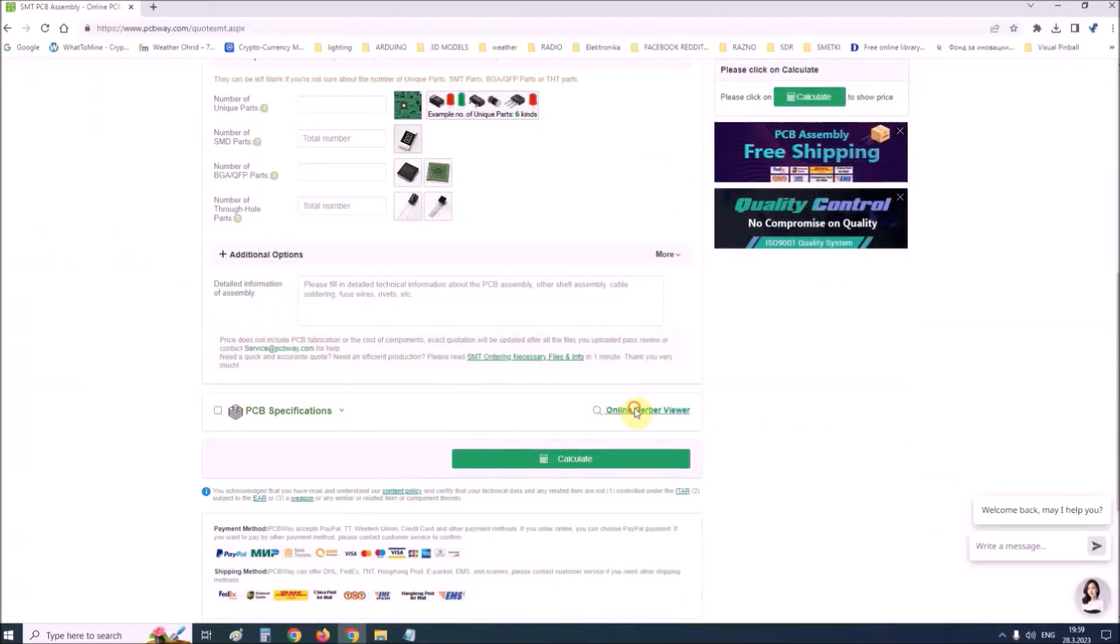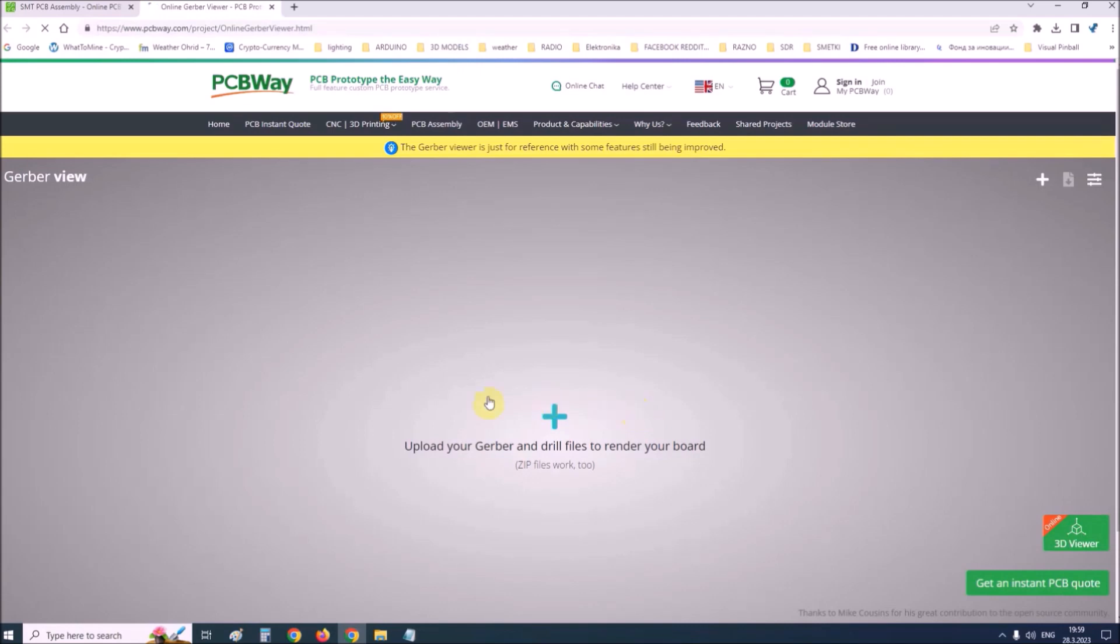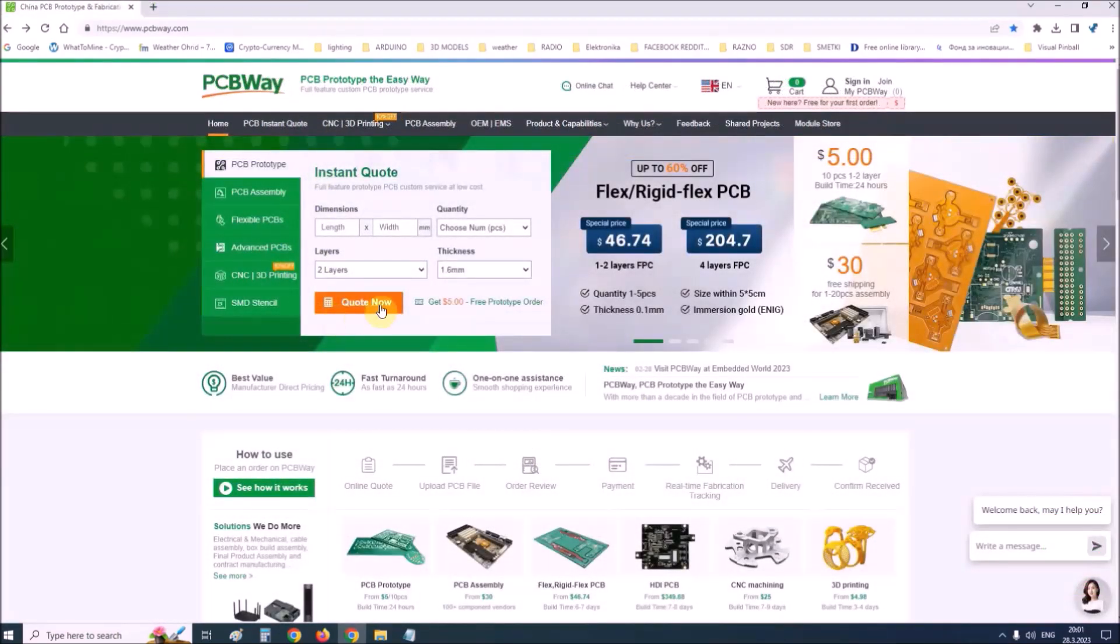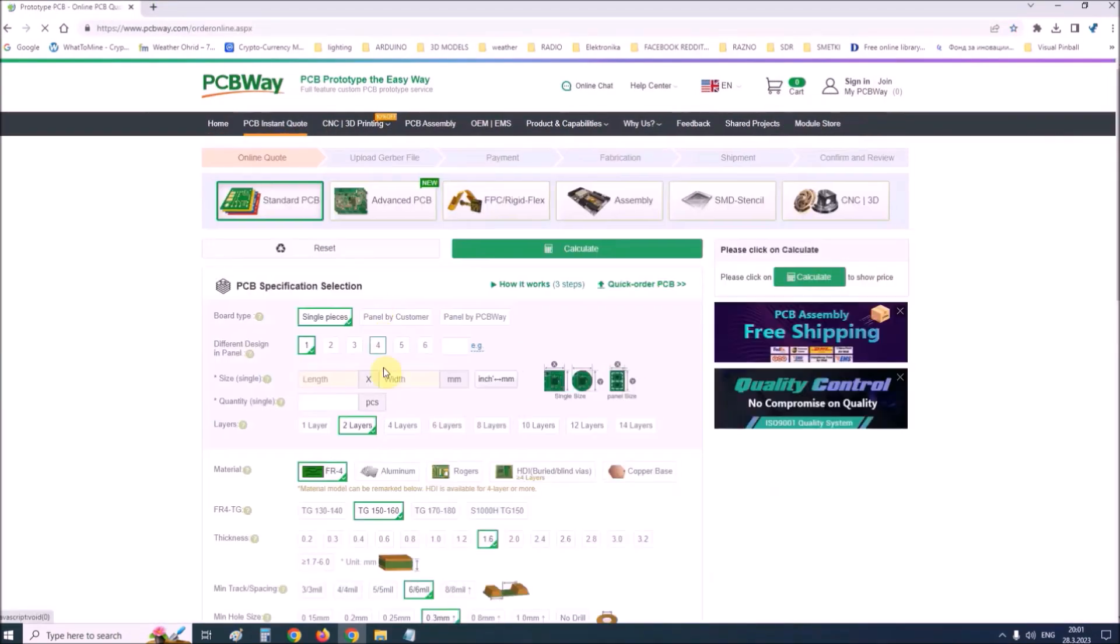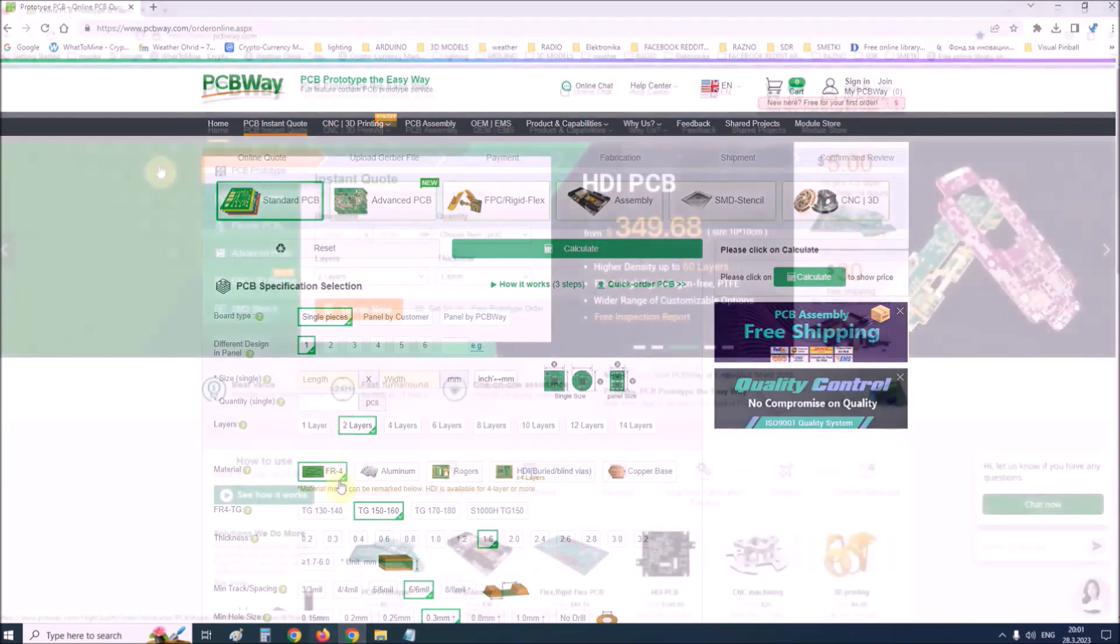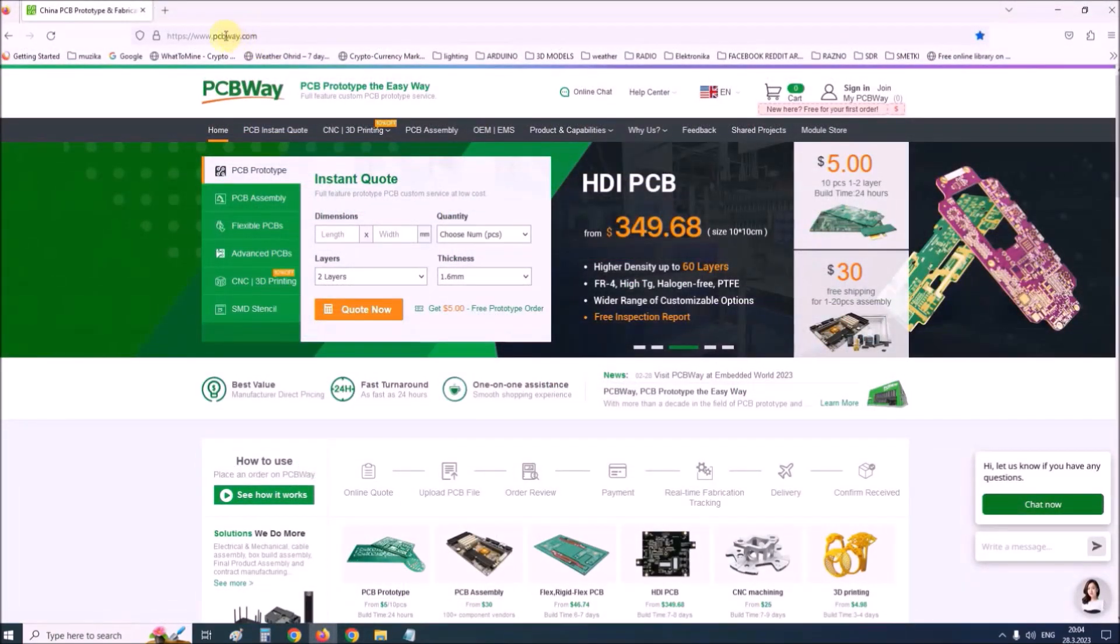They provide complete PCB assembly service with worldwide free shipping and ISO 9001 quality control system. Also on their site there is an online Gerber viewer where you can upload your Gerber and drill files to render your board. So if you want to make a PCB for your electronic project, PCBWay is a great choice for you. Visit their website at www.pcbway.com for more services.